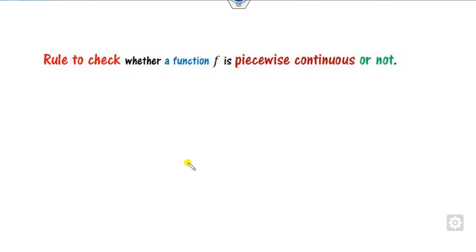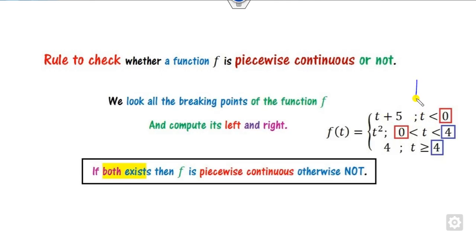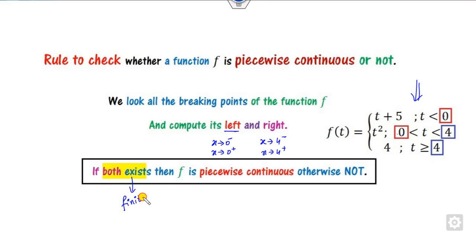How can you check whether the function is piecewise continuous or not? If the function has discontinuities at points like 0 or 4, our target is to compute the limit at 0 from the negative side and 0 from the positive side, and similarly at 4 from the negative and positive sides. If both limits exist — meaning both are finite — and they are not equal, then we call it piecewise continuous; otherwise not.